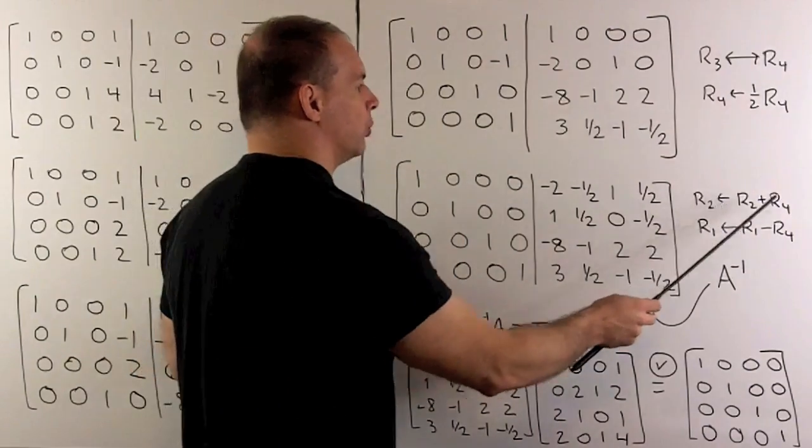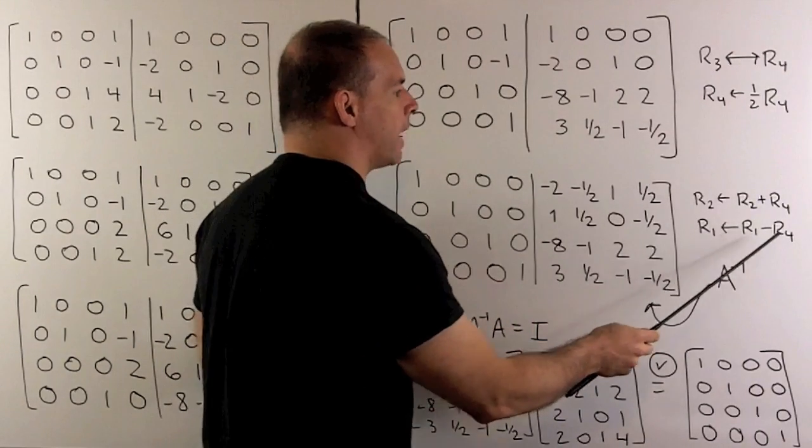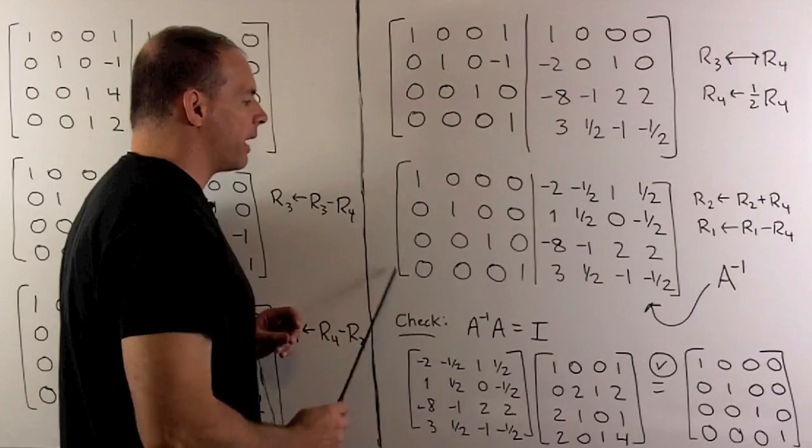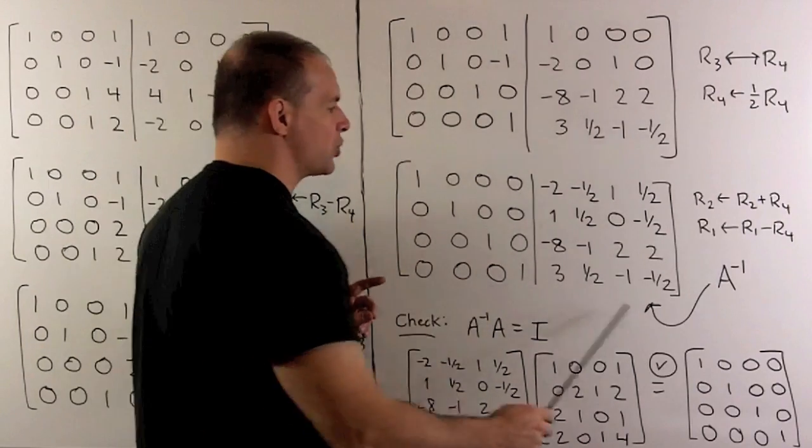So we're going to send row two plus row four to row two to eliminate this, and row one minus row four to row one. And that gets our four by four identity matrix in the first slot, so this matrix is our A inverse.